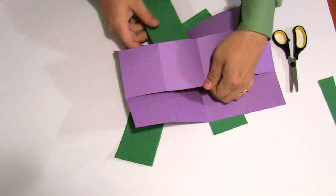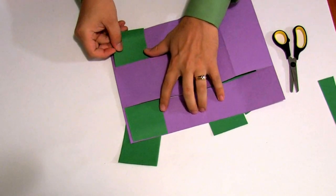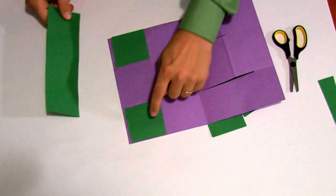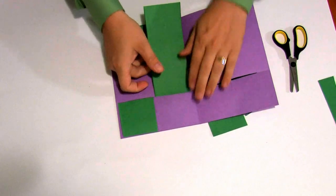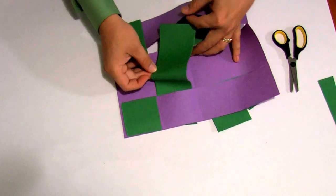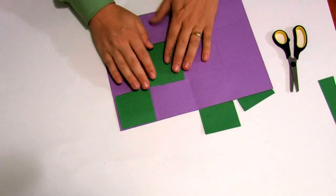Alright, our goal is to weave these strips of paper in and out. So we have green, purple, green, so now we're wanting to do purple, green, purple.